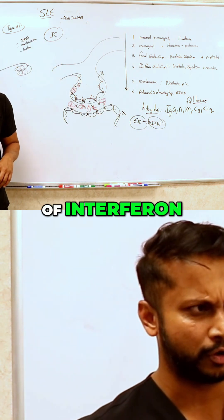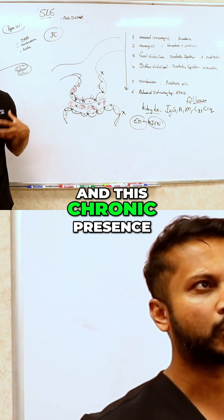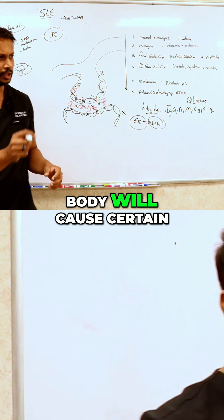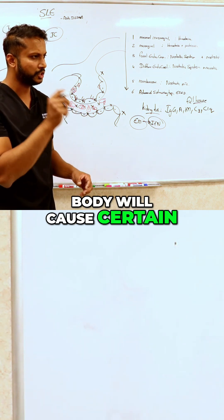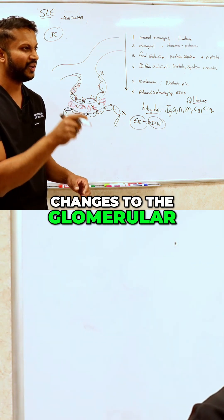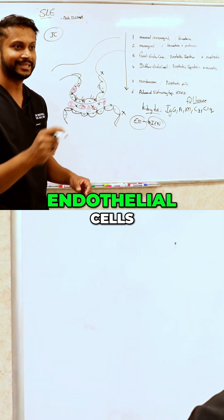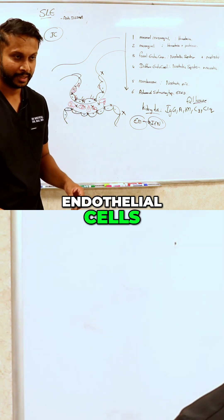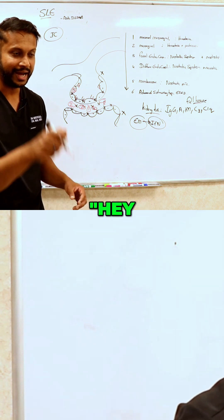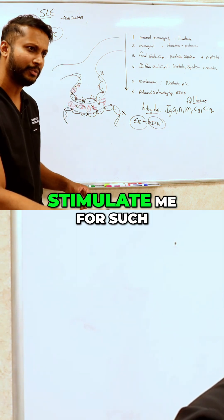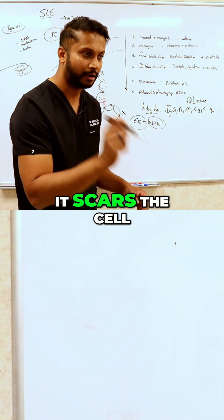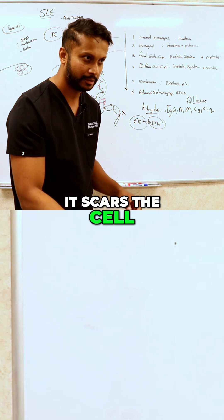You release a lot of interferon, and this chronic presence of interferon in the body causes certain changes to the glomerular endothelial cells — telling that cell it has had interferon stimulating it for such a long time that it scars the cell.